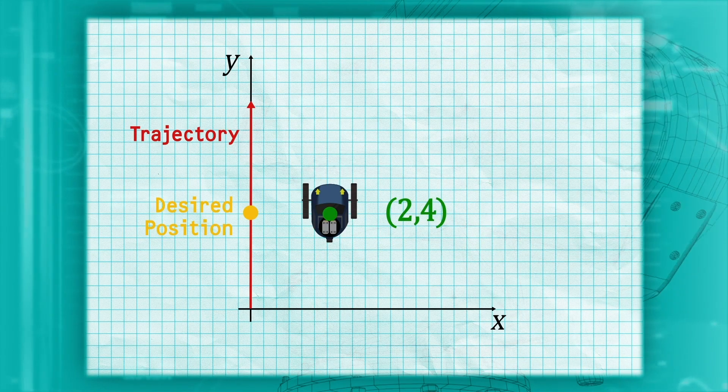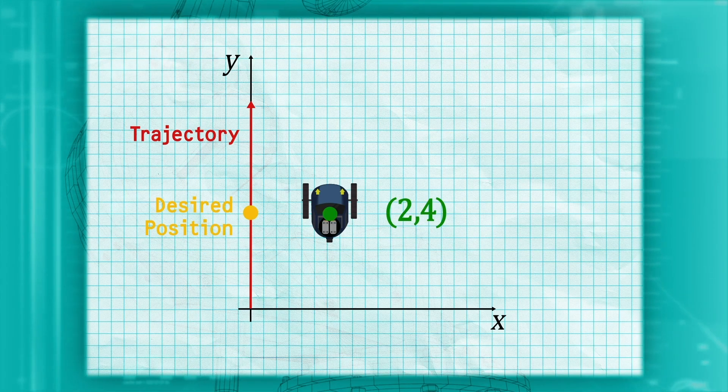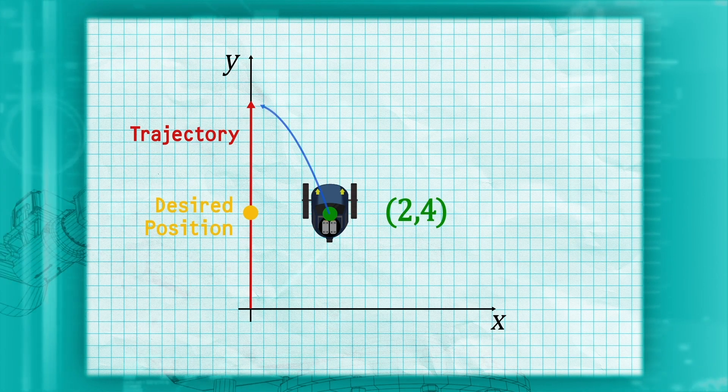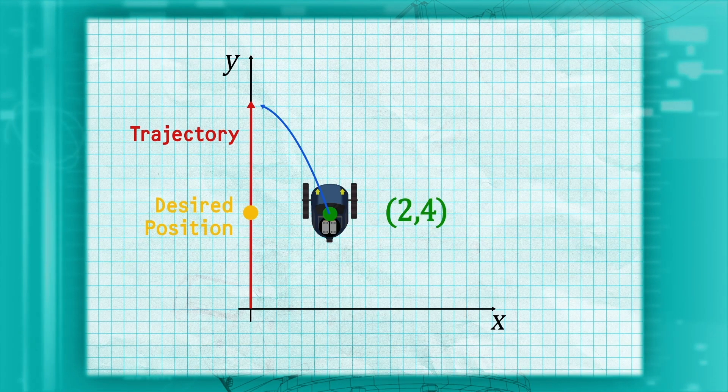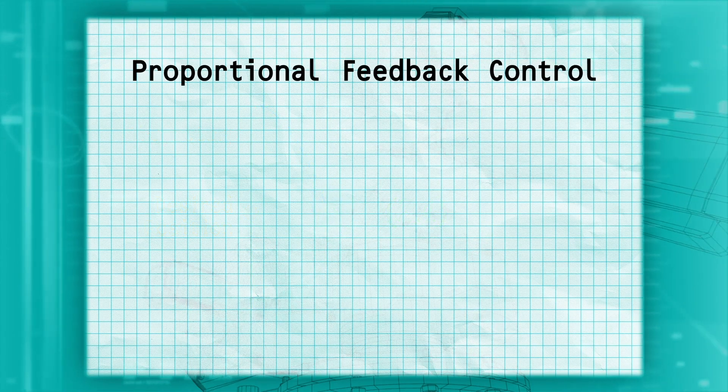What do we need to do? Intuitively, we are to the right of our desired path, so we need to turn to the left to correct our position. The robot has a different way of solving this. One way of solving this is called Proportional Feedback Control.